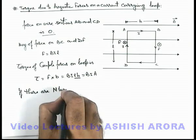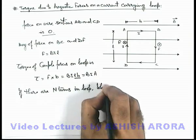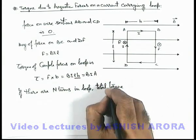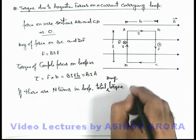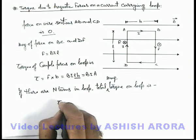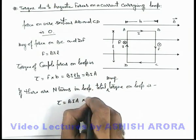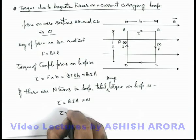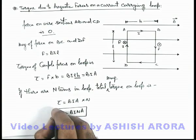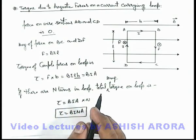We can also write that if there are N turns in the loop, the total torque — more precisely the magnetic torque on the loop — is given by tau = BiNA, where we simply multiply by N to get BiNA. That is the total torque acting on the current carrying coil placed in the magnetic field.